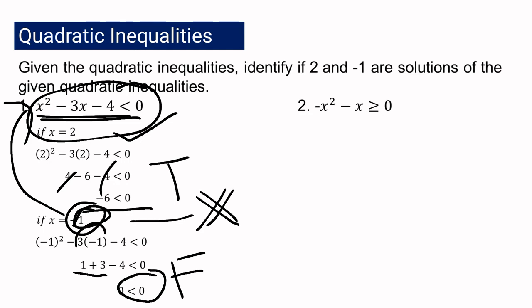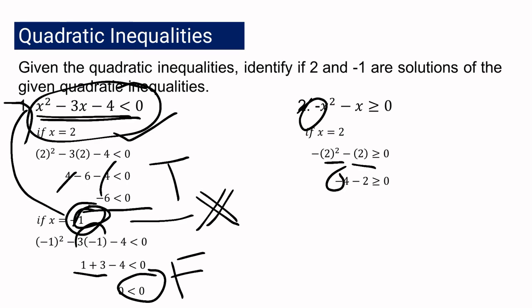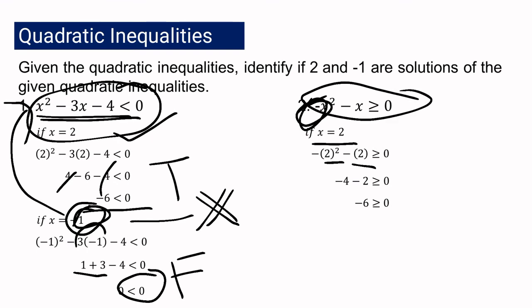For the second inequality, negative x squared minus x is greater than or equal to 0. Take note of the constant negative sign. If x equals 2: negative 2 squared minus 2 is greater than or equal to 0, which gives negative 4 minus 2, resulting in negative 6 greater than or equal to 0. This is a false statement, so 2 is not a solution to this inequality.